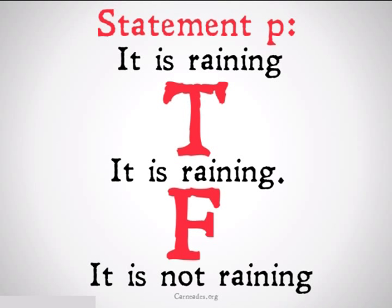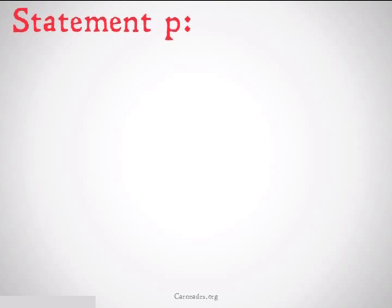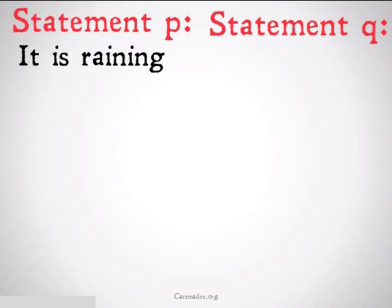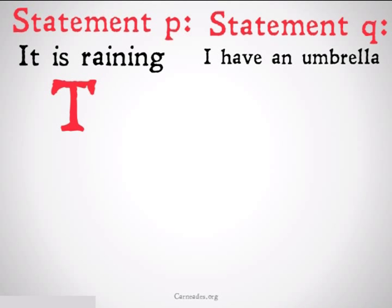Either it is raining or it's not raining. However, if you have two statements, such as statement P — it is raining — and statement Q — I have an umbrella — then you have four different outcomes.